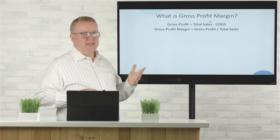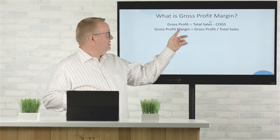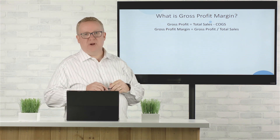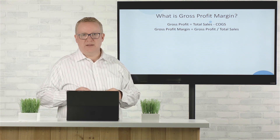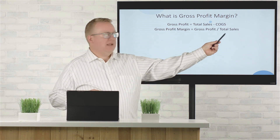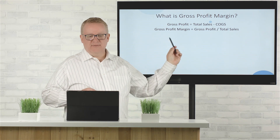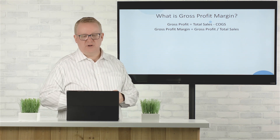The second thing to get our gross profit margin is we take the gross profit that we just calculated and we divide it by our total sales. That gives us our gross profit margin.